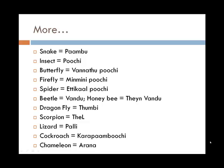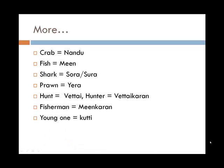So eight-legged insect, yette kal poochii, is spider. Beetle is generally referred to as vannati poochii. A honeybee would be tenvannati — ten refers to honey, so tenvannati is honeybee. A dragonfly is tumbi. A scorpion is tail. Lizard is palli. A roach is karapambuchi. A chameleon is arana. A crab is nanda. Fish is mean. A shark is surah. Prawn is yera.